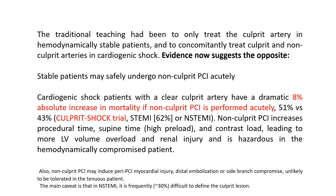In cardiogenic shock, doing PCI versus not doing PCI — from the initial SHOCK trial — gave a close to 10% absolute reduction in mortality. Now doing non-culprit PCI on top of culprit PCI gives an 8% increase in mortality. You almost eliminate any benefit of PCI by doing non-culprit PCI. Try to limit yourself to the culprit lesion.